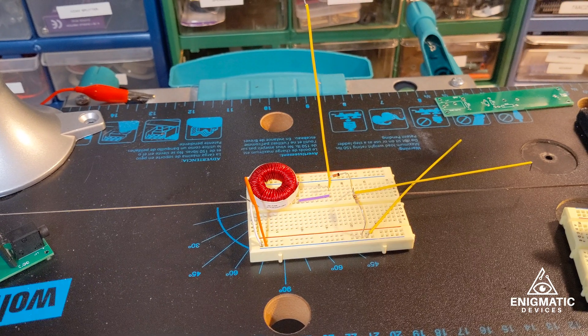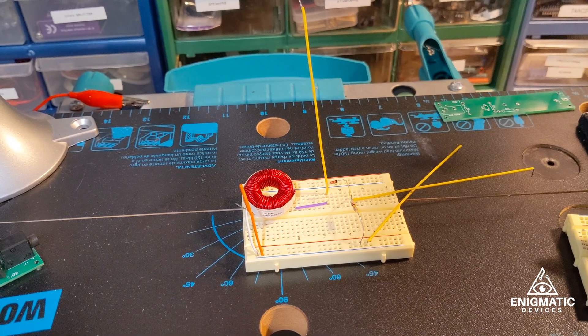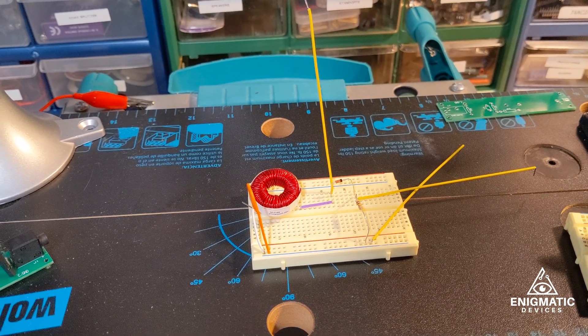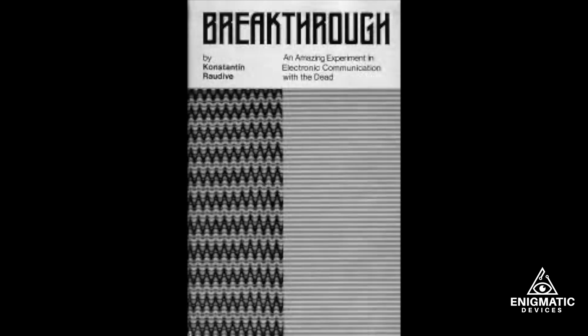So basically, Rodeve, back in 1971, wrote a book. It was called Breakthrough, An Amazing Experiment in Electronic Communication with the Dead. And this was really the first book that talked about how you can use electronic devices to apparently hear spirits from the beyond through electronic means. He talked about a variety of ways that you could do that.